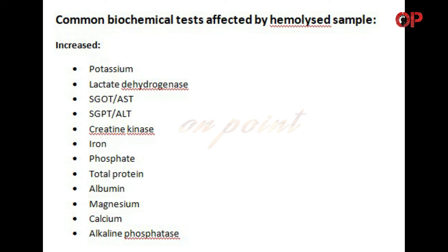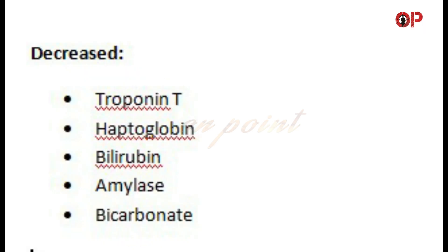Common biochemical tests affected by hemolysis. Increased: Potassium, Lactate dehydrogenase, SGOT (AST), SGPT (ALT), Creatine kinase, Iron, Phosphate, Total protein, Albumin, Magnesium, Calcium, Alkaline phosphatase. Decreased: Troponin T, Haptoglobin, Bilirubin, Amylase, Bicarbonate.